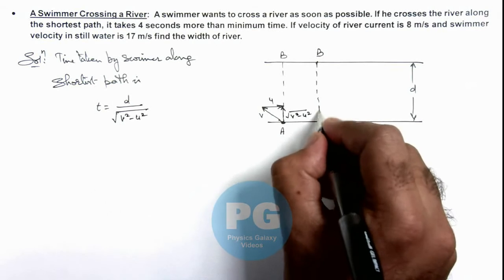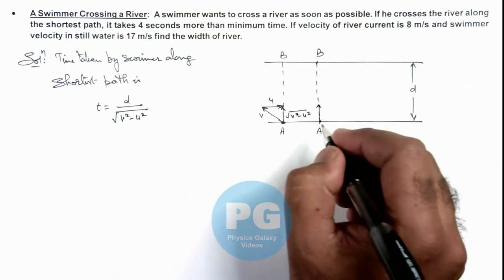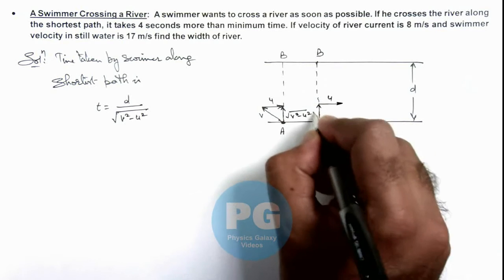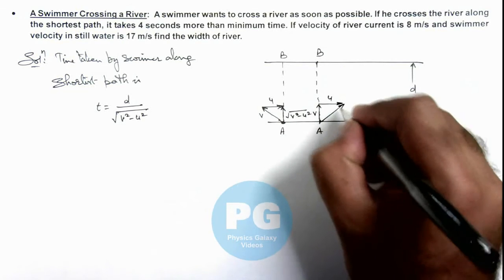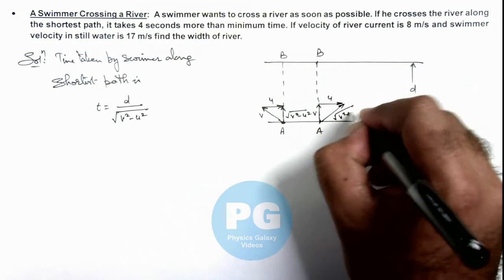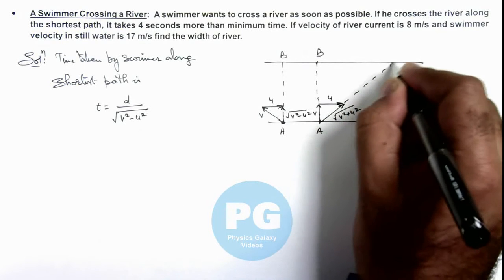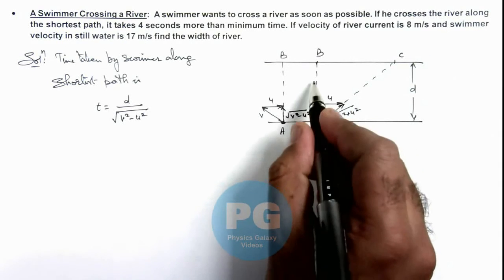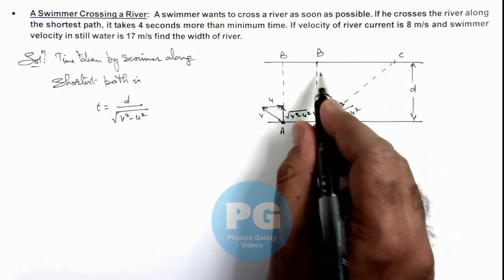And if he heads along this normal direction, he'll take minimum time in reaching but he'll reach somewhere else. If this is v, this is u, this will be root of v square plus u square and he'll reach somewhere else at point C. But as the crossing velocity of swimmer is maximum, he'll take minimum time.